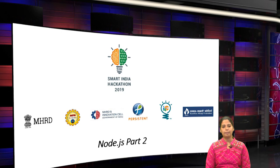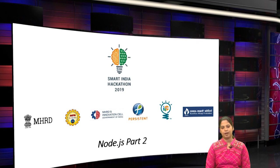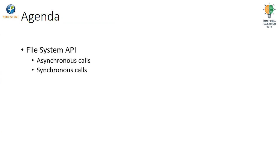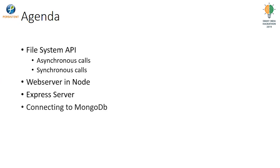In this session I will mainly be demonstrating the different Node APIs and different ways of working with them, such as asynchronous execution versus synchronous execution. We will also see a complete example of how you can build a REST API using the Express framework. The agenda covers the file system API including asynchronous and synchronous calls, writing a web server with Express, and connecting to MongoDB from Node.js.